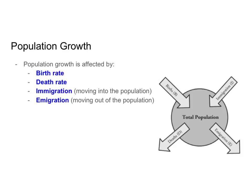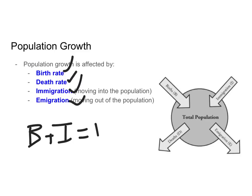Birth rate and immigration are two things that cause a population to grow, and death rate and emigration are two things that cause a population to shrink. If birth rate plus immigration equal death rate plus emigration, then the population will stay the same size. If birth rate and immigration are greater, then a population is growing. If death rate and emigration are bigger, then a population is shrinking.